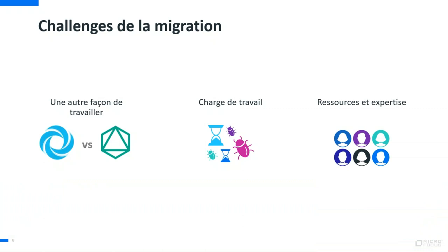Quels sont les challenges à adresser lors de cette migration ? Premier point : ALM.NET et ALM Octane sont deux produits de la même gamme autour du testing, mais deux façons de travailler différentes, à la fois parce qu'on va adresser des types de projets potentiellement différents, et parce que ALM.NET est très ouvert avec beaucoup de customisation possible et un cycle de vie orienté cycle en V, tandis qu'Octane est plus orienté projets agiles avec des workflows conçus différemment.